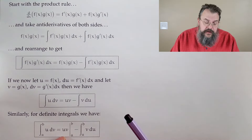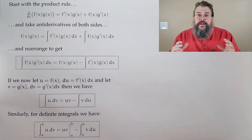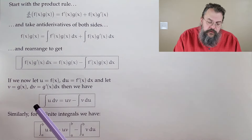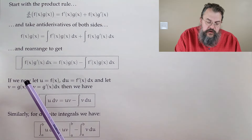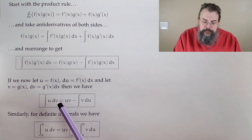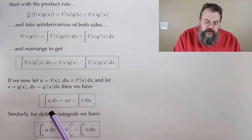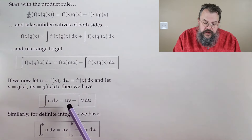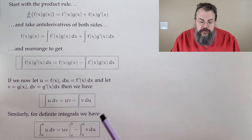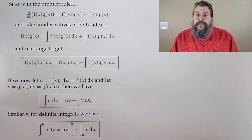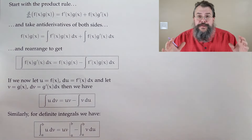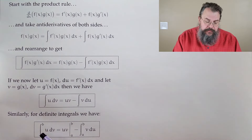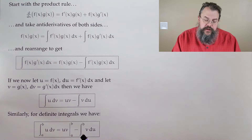In standard notation, we introduce variables: we call u = f(x) and v = g(x), so g′(x)dx becomes dv, and f′(x)dx becomes du. The formula is written as: the integral of u dv equals uv minus the integral of v du. For definite integrals, the integral from a to b of u dv equals uv evaluated from a to b, minus the integral from a to b of v du.